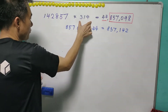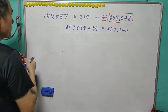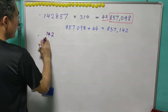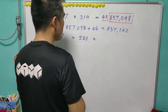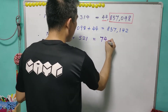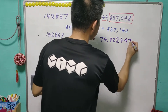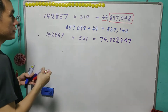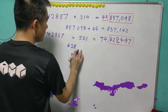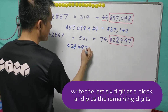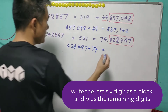This is not only true for 314; it is true for any number. Let's look at a second example: 142857 times 521, and we get 74428497. We do the same operation — 428497 plus 74 — and in this case we get 428571, a permutation of the original number.